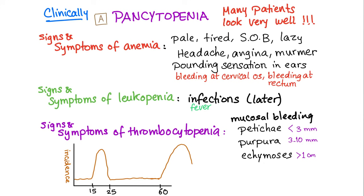The incidence of aplastic anemia is biphasic. You will have increased peak incidence between ages 15 to 25 and over 60 years old patients.